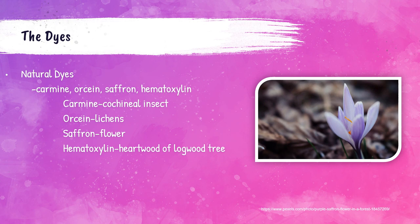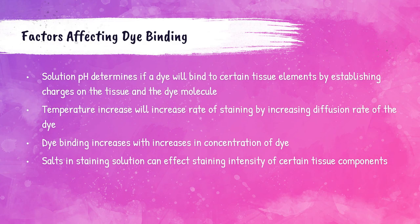Only a few natural dyes are used in the histopathology lab. The most common are carmine, orcein, saffron, and hematoxylin. Carmine is derived from cochineal bugs, orcein is derived from lichens, saffron is derived from the crocus flower, and hematoxylin is from the heartwood of a logwood tree.